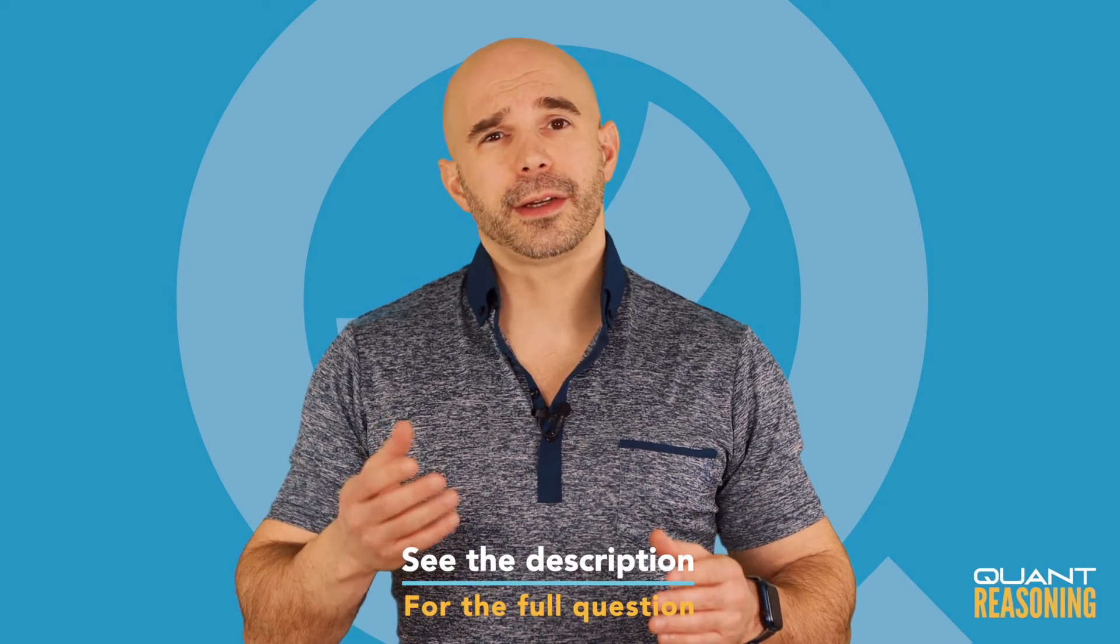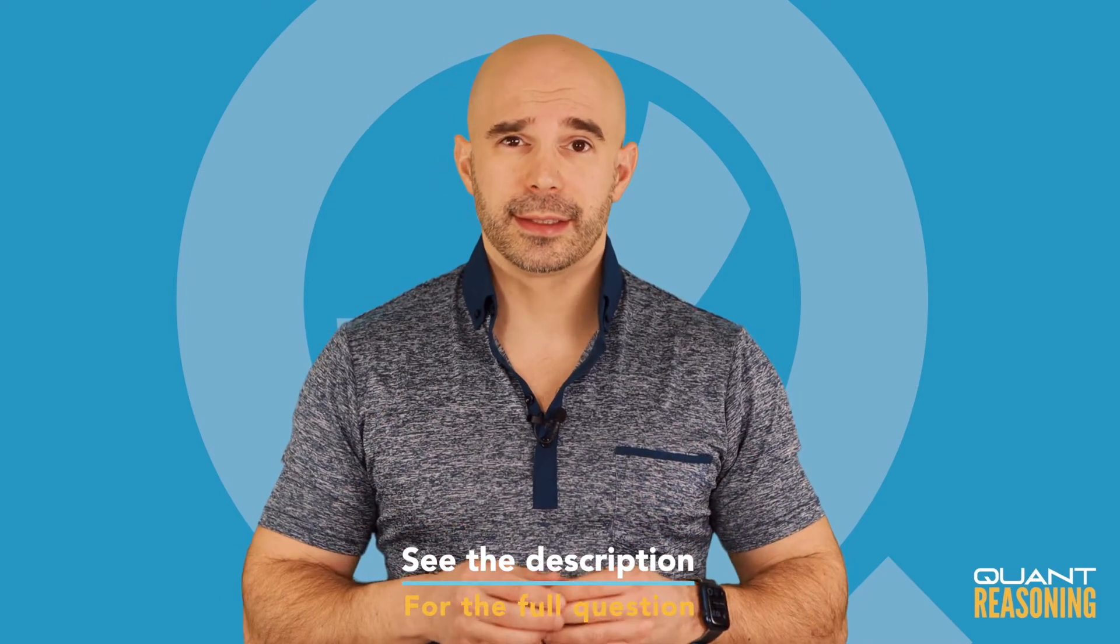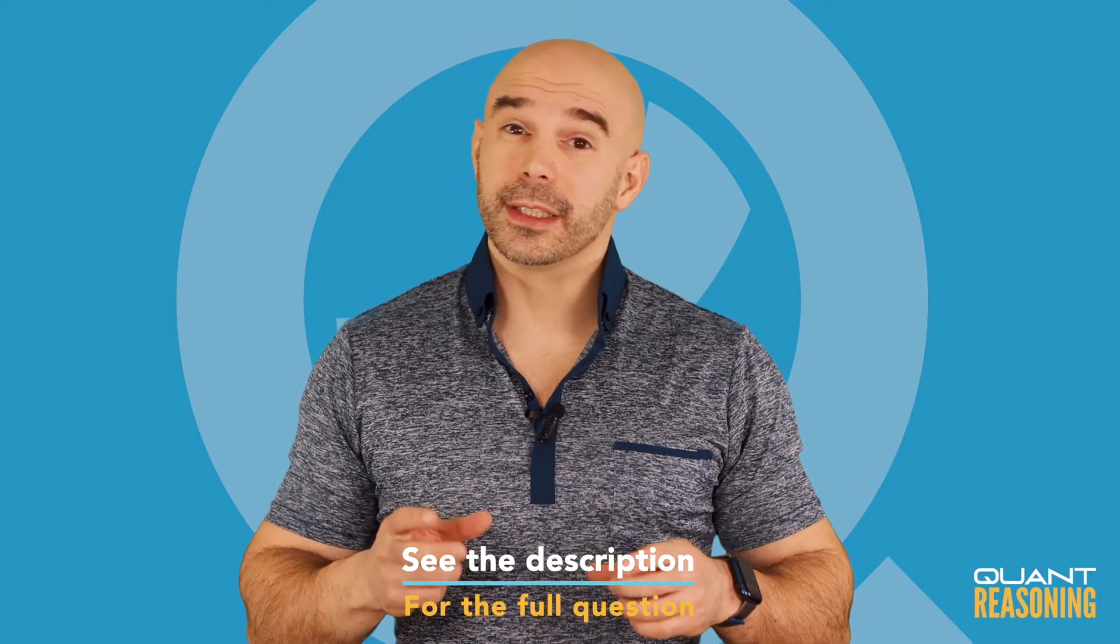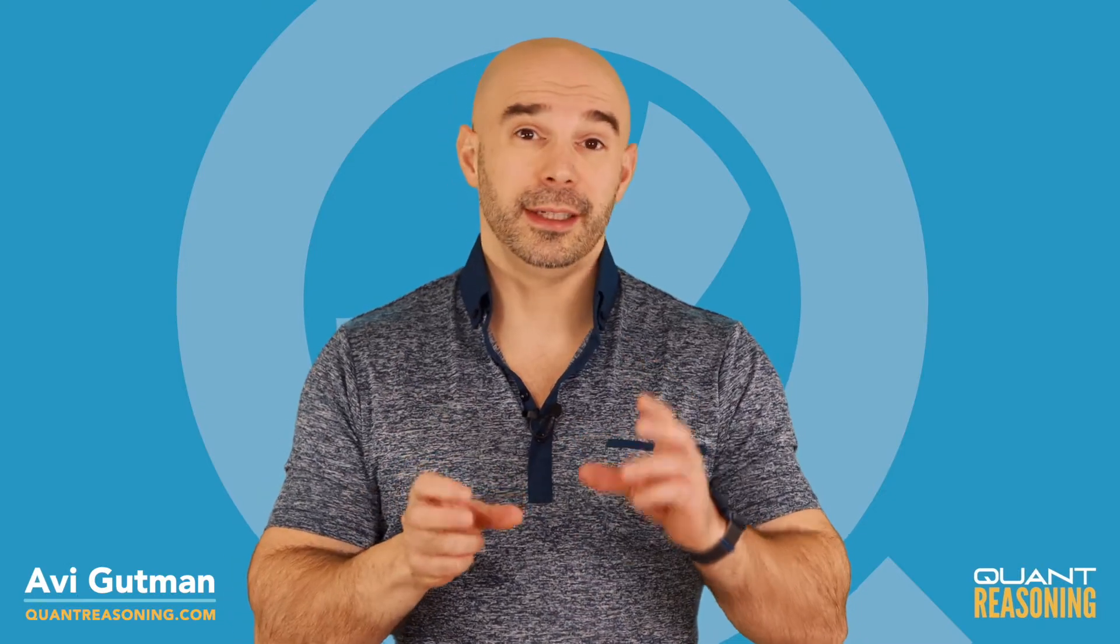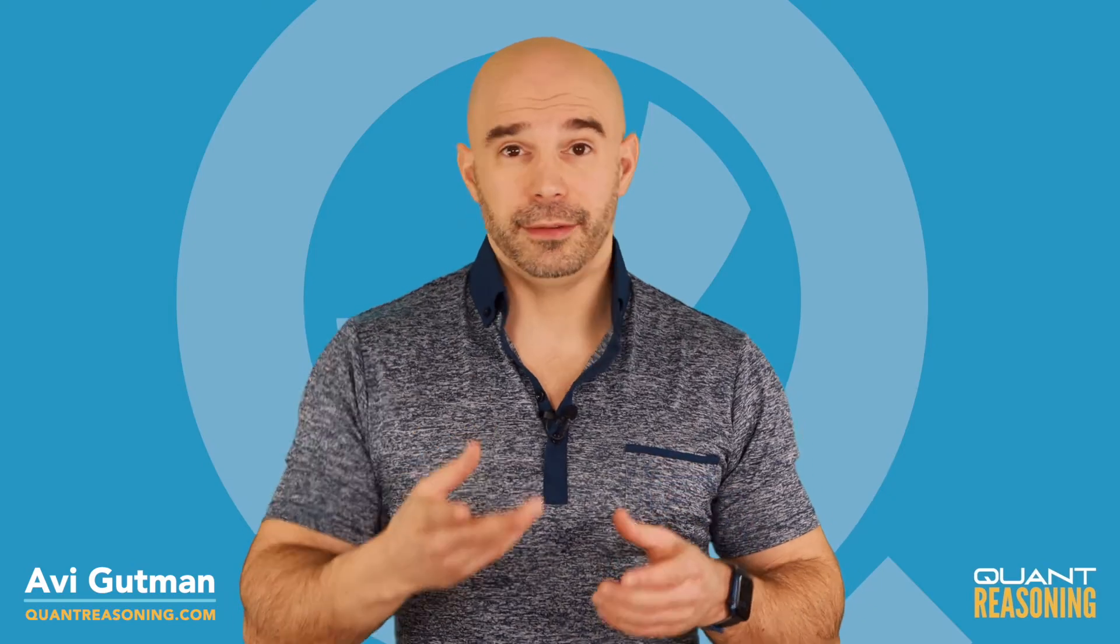This data sufficiency question is asking whether the areas of these two triangles are equal. And lucky for us, finding the area of a right triangle is not that hard, because we have a base and its height as the two sides with the 90 degrees in between them, and we know that the area is just half of their product.